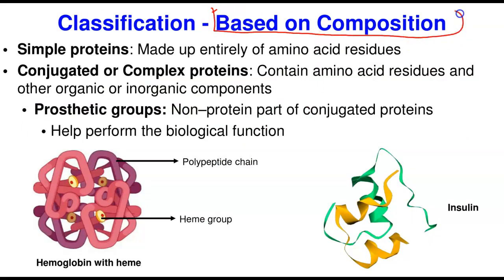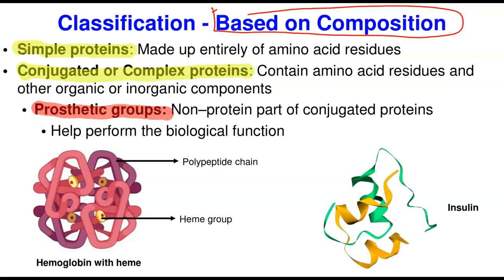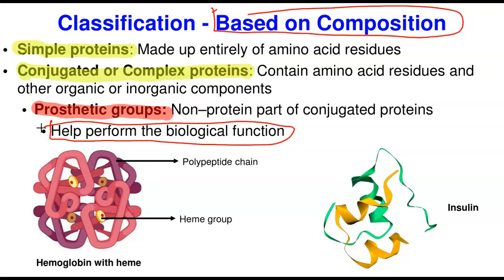Classification based on composition yields two classes. Simple proteins are made up entirely of amino acid residues — no metal, no other non-protein component. Insulin is an example of a simple protein because it only contains amino acids and nothing else.